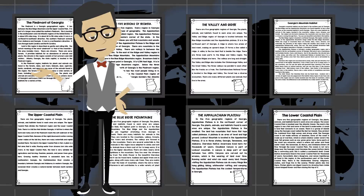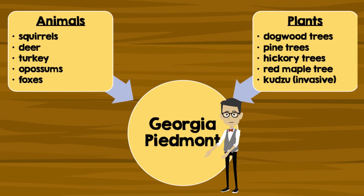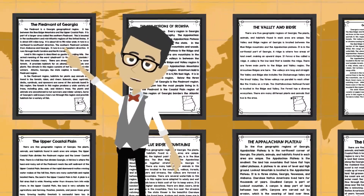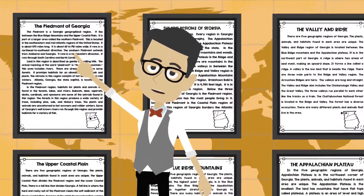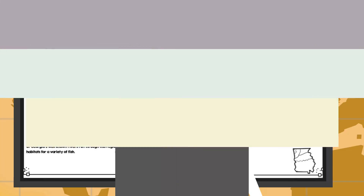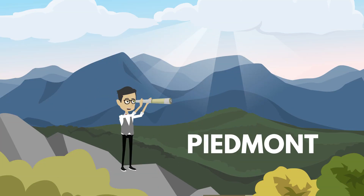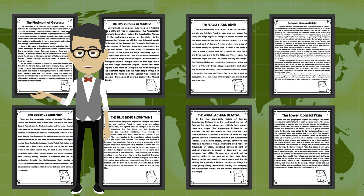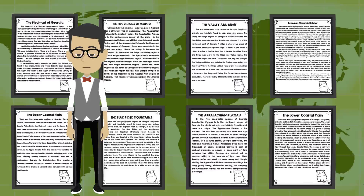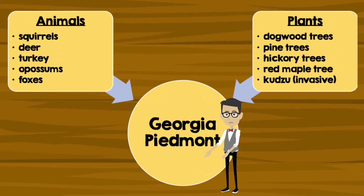Some of Georgia's well-known rivers run through the Piedmont region and provide habitats for a variety of fish. Animals found within Georgia's Piedmont include squirrels, deer, turkeys, possums, and foxes. Plants found within Georgia's Piedmont include dogwood trees, pine trees, hickory trees, red maple trees, and kudzu, which is an invasive species.